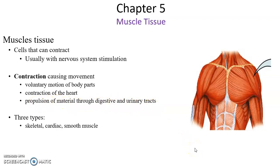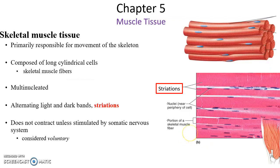And there are three main kinds of muscle tissue: skeletal muscle tissue, cardiac muscle tissue, and smooth muscle tissue.